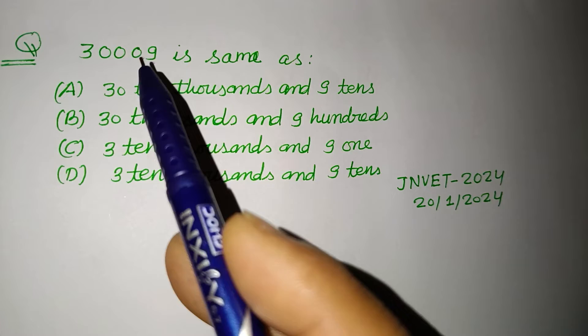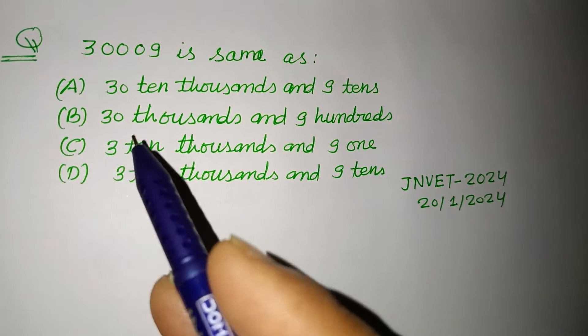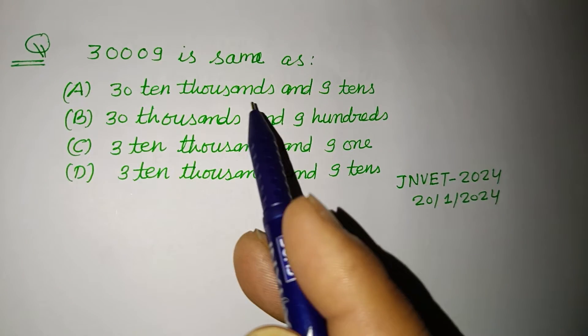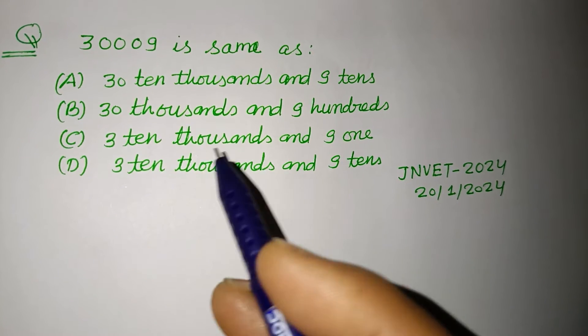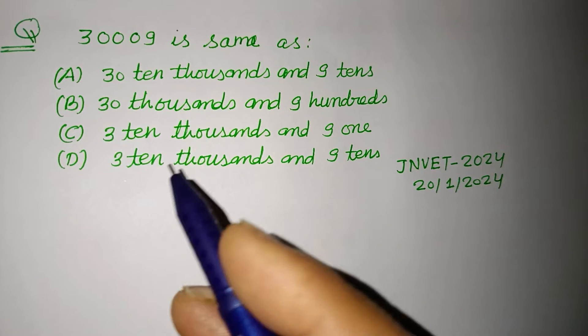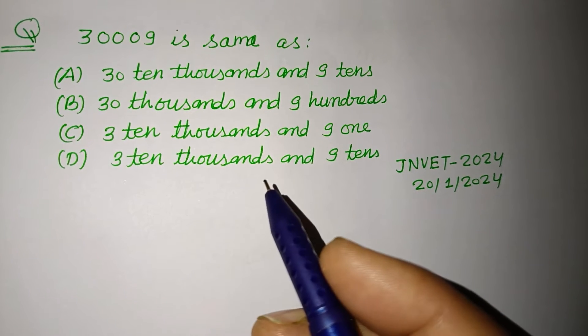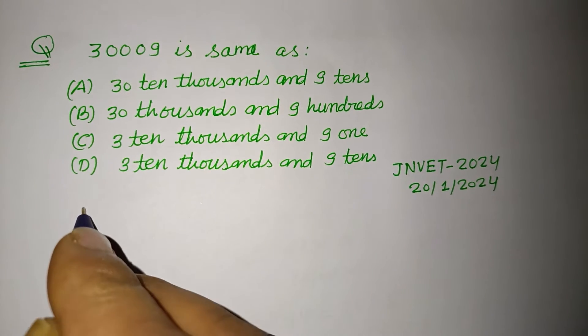30009 is same as 3 ten thousands and 9 tens, 30 thousands and 900, 3 ten thousands and 9 one, 3 ten thousands and 9 tens.